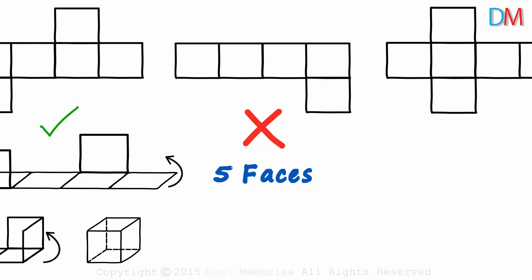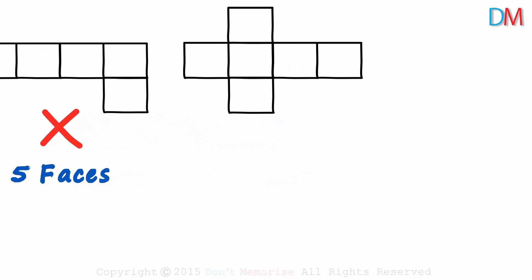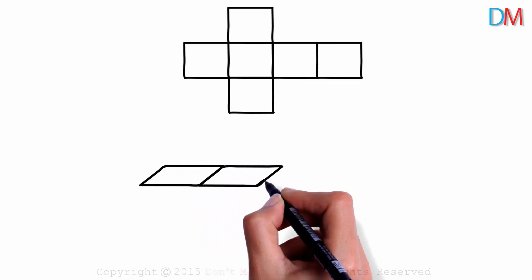And what about the fourth figure? Pause the video and try it out. This is how the net will look if placed on a plain surface. Four faces in the same line and two more attached to one of the squares. Making these two square faces vertical will give us a figure which looks like this.